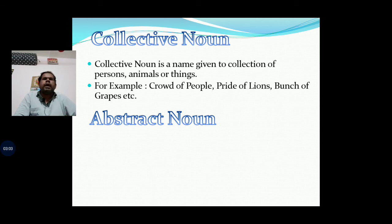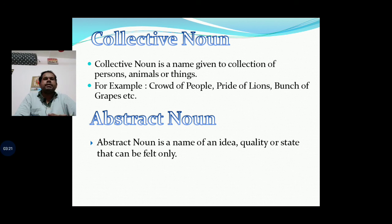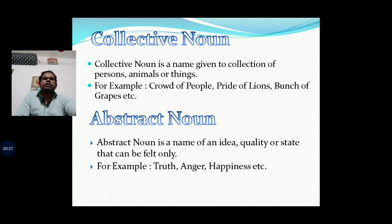Now, Abstract Noun. Abstract Noun is a name of an idea, quality or state that can be felt only. That is, any such thing or feeling that we can only feel — we cannot see it, we can only feel it. So here in examples, truth, anger, happiness, etc. are written. These are all things that we can only feel, not see.